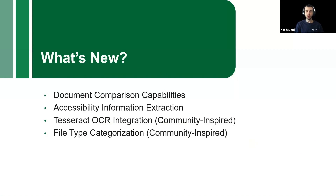So let's quickly go over what we'll be seeing today. To start us off, we'll see the exciting and powerful functionality of the new document comparison capabilities, followed by the ability to extract accessibility information from Microsoft Office documents. We'll then go over a couple of community-inspired enhancements: an enhanced Tesseract OCR integration and a new file type categorization.